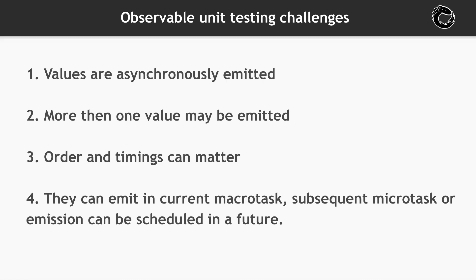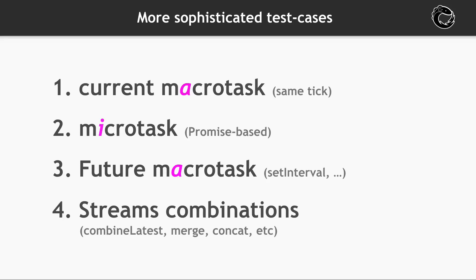The main challenges we can meet during unit testing of observables are: data are emitted asynchronously, more than one value will be emitted, order of values may matter, values are emitted with a specified delay, and sometimes in broad cases this delay can be quite big. Translating these challenges to browser event loop terminology, we should be ready to write unit tests for synchronous code, for async code that emits in the next MicroTask like promises do, and for async code that emits in the next MacroTask which is placed in the event loop queue, possibly with some delay.